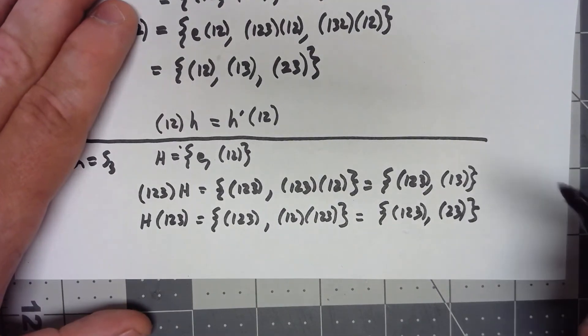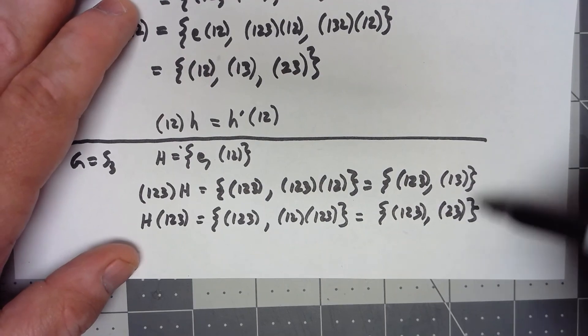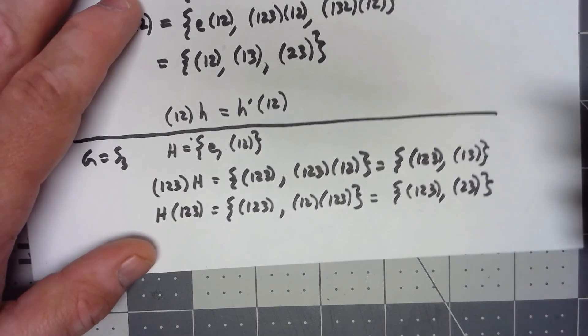So there we go. The left coset and the right coset are not the same, therefore this H is not a normal subgroup.